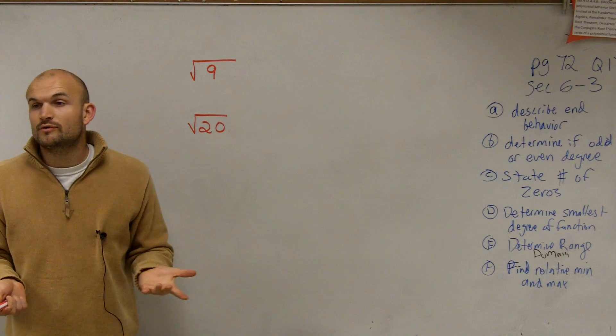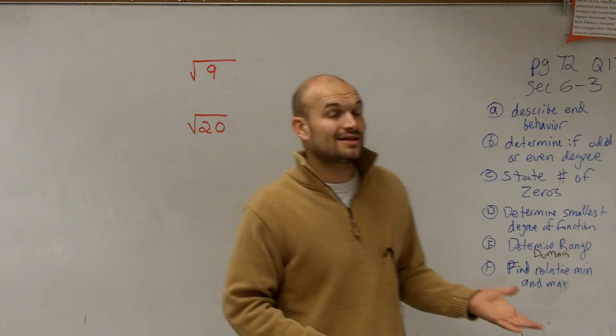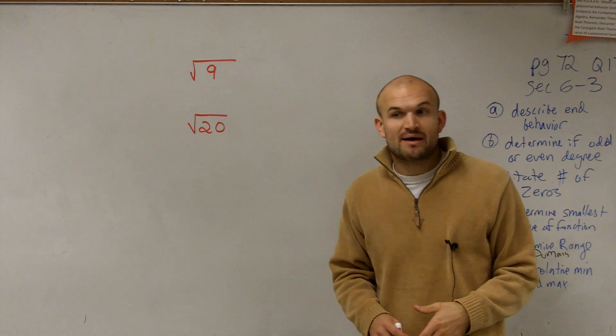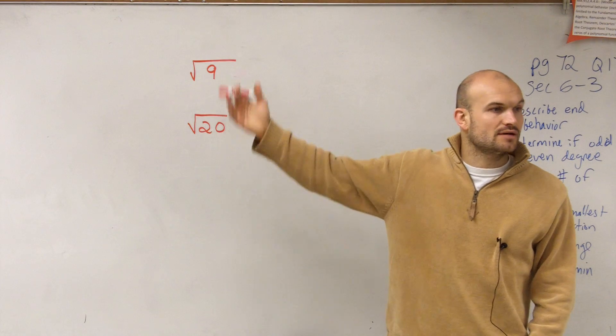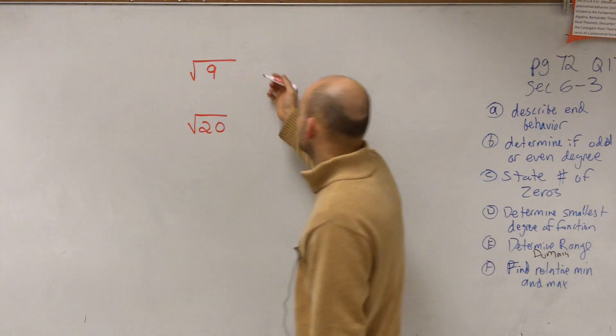If I have the square root of 9, remember the square root of 9 says what number multiplies by itself to give me 9. So what number multiplied by itself gives 9? That's what the square root of 9 is, so you say 3. Very good.